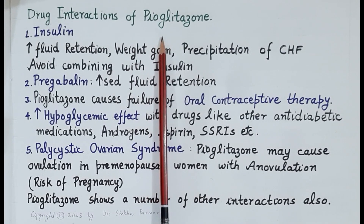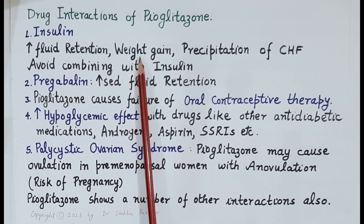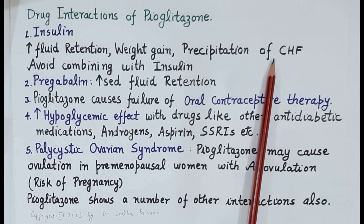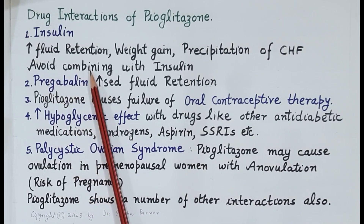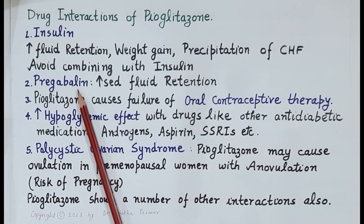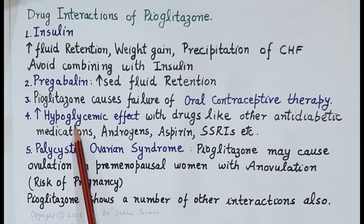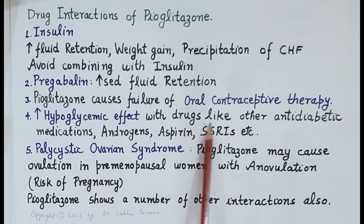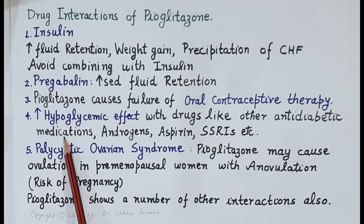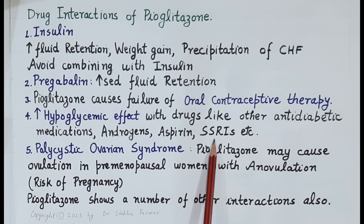Now let's discuss important drug interactions of pioglitazone. The first interaction is with insulin — greater fluid retention, weight gain, and precipitation of congestive heart failure occur when pioglitazone is combined with insulin, so avoid combining them. There is also increased fluid retention when pioglitazone is combined with pregabalin. In addition, failure of oral contraceptive therapy may occur during pioglitazone therapy. The risk of hypoglycemia increases when pioglitazone is given with other anti-diabetic medications, such as sulfonylureas, as well as with drugs like androgens, aspirin, and SSRIs (selective serotonin reuptake inhibitors).